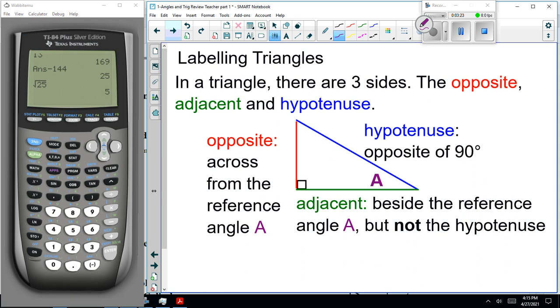Now, moving on. Labeling triangles. In a triangle, there are three sides. The opposite, adjacent, and hypotenuse. This is all based on the angle. I'm calling it A here. So, the opposite side is across from the reference angle A. The adjacent is the short side beside angle A. And the hypotenuse is the long side, opposite 90 degrees. So, when you're doing these, what I suggest you do is find hypotenuse first. It's the long side, opposite 90 degrees. And the second thing you'll find is the opposite. That's the side opposite away from the angle. And that leads to the third side, adjacent. And do it that way, please.